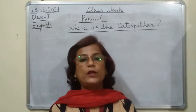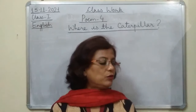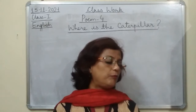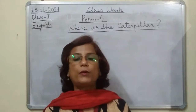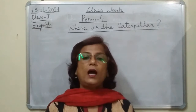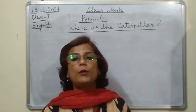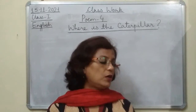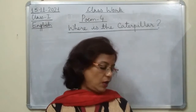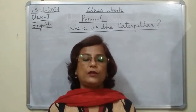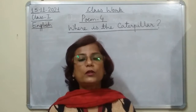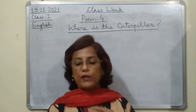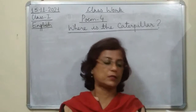We have written spellings, word meanings, and have started with comprehension. There are 3 exercises in comprehension. We have done the first exercise and then we did some frame sentences. Today we will be doing exercises B and C in the book itself. Take out your English course book, that is Wordsworth English Reader, and turn to page number 65 for the comprehension exercises.